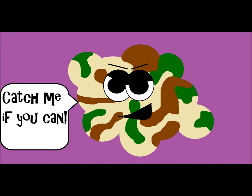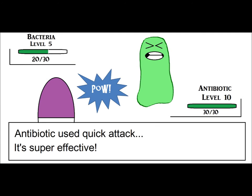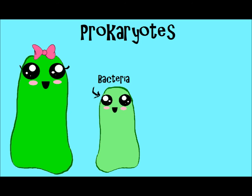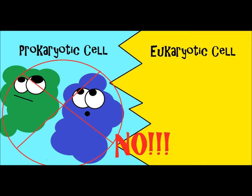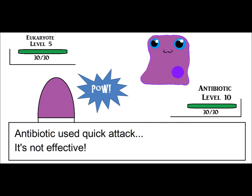Why? Well, for one thing, antibiotics do not work on fungi. Antibiotics only work on bacteria. Bacteria are an example of prokaryote cells. So fungi — it's not a type of prokaryote. It's actually the other type of cell, called eukaryotes. And antibiotics are not effective against eukaryotes.